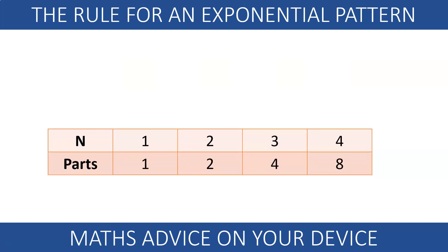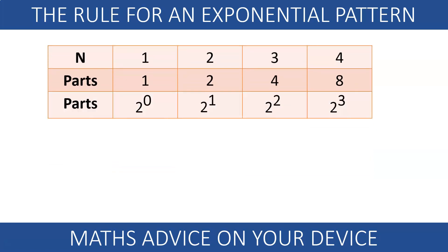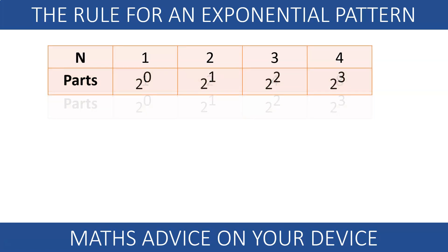The first term is 2 to the 0. The second term is 2 to the 1. The third term is 2 to the 2. The fourth term is 2 to the 3. The nth term is 2 to the n-1.